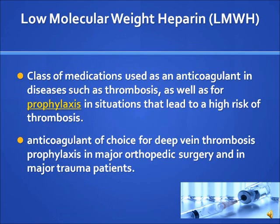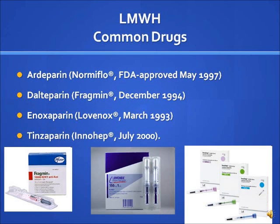Low molecular weight heparin is a class of medications used as an anticoagulant in diseases such as thrombosis, as well as for prophylaxis in situations that lead to a high risk of thrombosis. It is the anticoagulant of choice for deep vein thrombosis prophylaxis in major orthopedic surgery and in major trauma patients. Common low molecular weight heparin drugs include ardeparin (Normiflo), dalteparin (Fragmin), enoxaparin (Lovenox), and tinzaparin (Innohep).